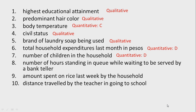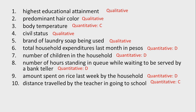Number 6: total household expenditures last month in pesos — quantitative and discrete. Number 7: number of children — quantitative and discrete. Number 8: number of hours standing in queue — quantitative and discrete. Number 9: amount spent on rice last week by the household — quantitative and discrete. Number 10: distance traveled by the teacher in going to school — quantitative and continuous. For number 8, it is discrete because you just count the hours — one hour, two hours. For number 10, it is continuous because you have to measure the distance in meters or kilometers.